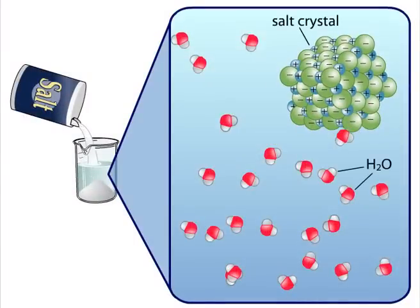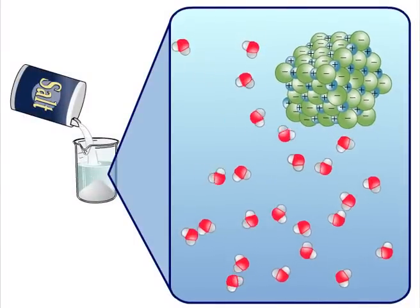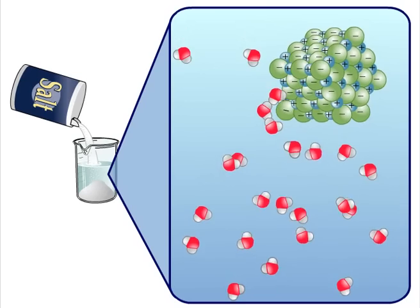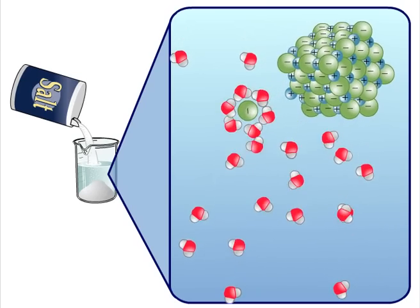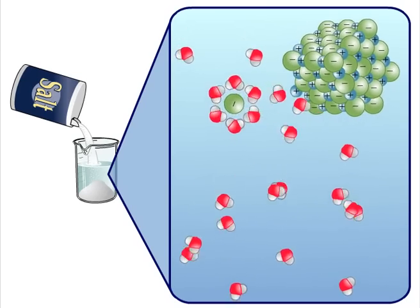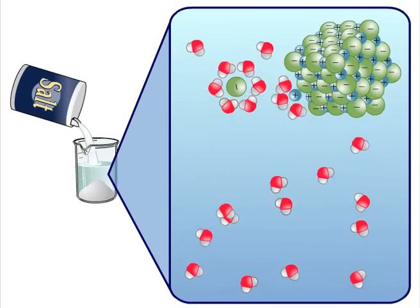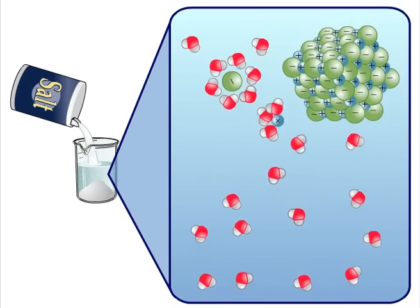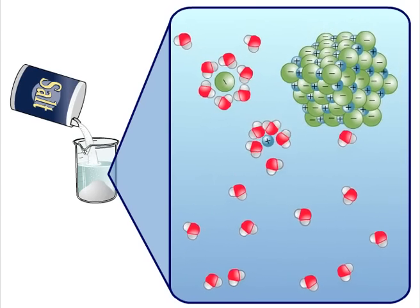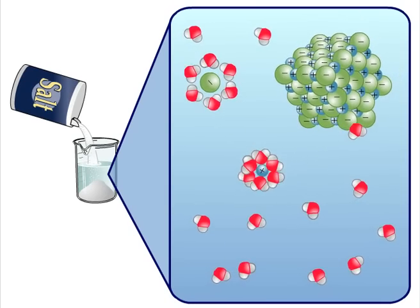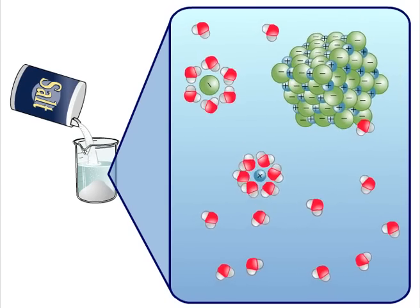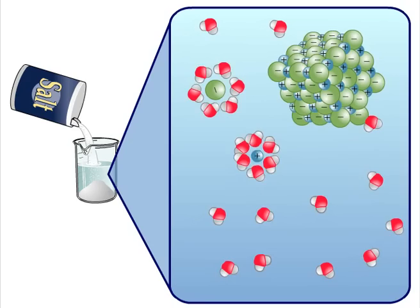Ionic bonds can be broken down in water. The partial charges on water molecules are attracted to the full ionic charges on the ions. When the solid dissolves, it breaks down into separate ions, each surrounded by a sphere of water molecules.